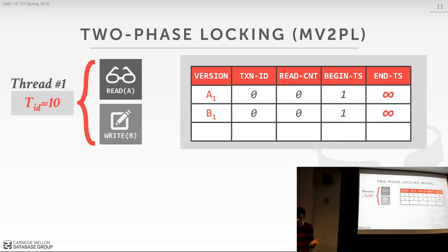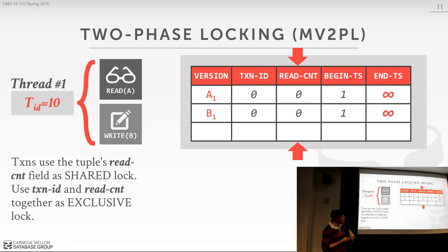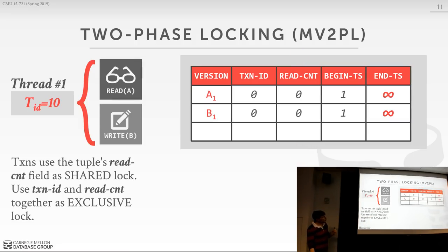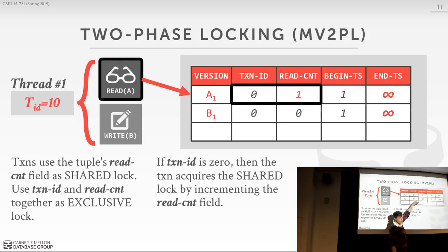Now let's look at two-phase locking. We get rid of the read timestamp and instead have a read count. We use the read count as a way to essentially be the shared lock — keeping track of how many transactions hold the shared lock on the tuple. We also use a combination of transaction ID and read count to represent the exclusive lock. If the transaction ID is not zero, then someone holds the exclusive lock while they're modifying the tuple. When doing a read, I check that the transaction ID is zero, meaning nobody has the exclusive lock, then do a compare-and-swap to flip the read count to 1, giving me the shared lock.